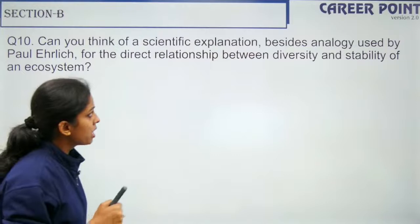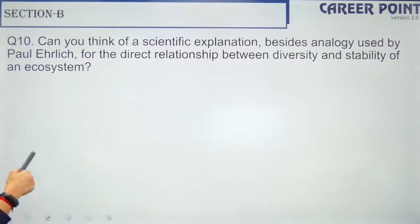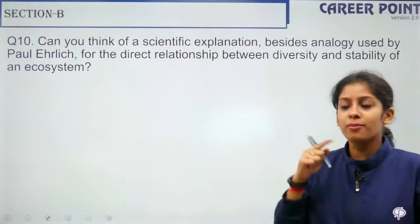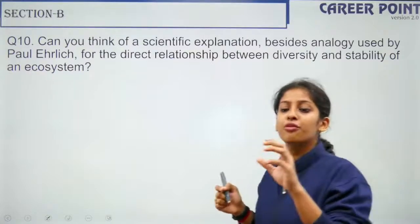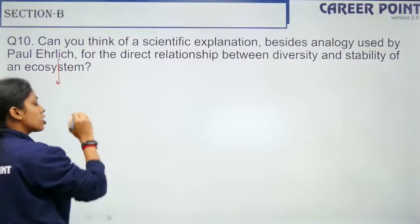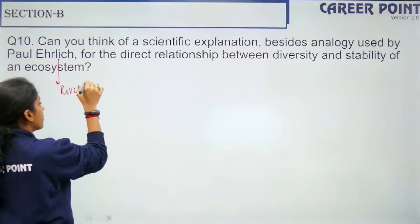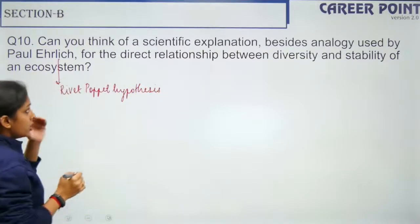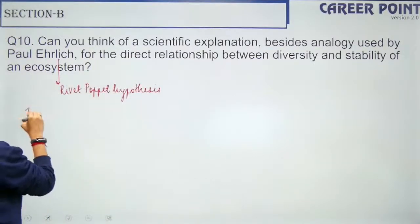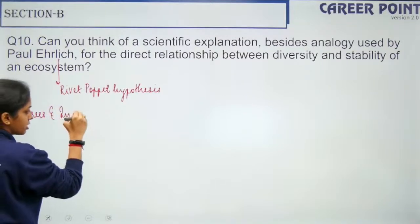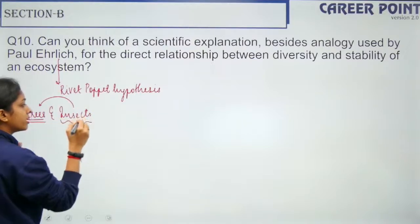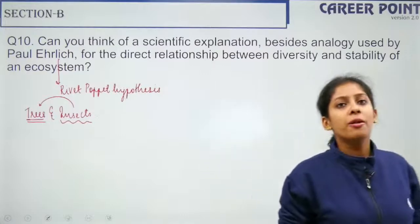Question 10: 'Can you think of a scientific explanation for the direct relationship between diversity and stability of an ecosystem, besides the analogy used by Paul Ehrlich?' First, briefly explain the rivet popper hypothesis that Paul Ehrlich proposed. Then give a scientific analogy: trees and the insects living on them — as tree populations decline, we observe a corresponding decline in insect populations like ants. Always mention the rivet popper hypothesis when Paul Ehrlich is referenced.